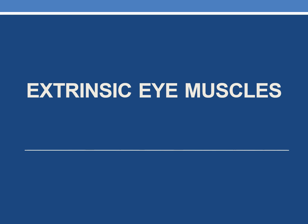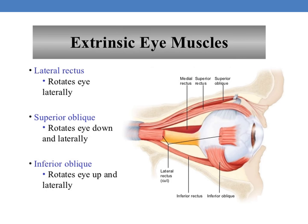Now coming to the final accessory structure: extrinsic eye muscles. Here you can see the lateral rectus, superior oblique, inferior oblique, inferior rectus, superior rectus. The lateral rectus rotates the eye laterally; the superior oblique rotates the eye down and lateral; and the inferior oblique rotates the eye up and lateral.